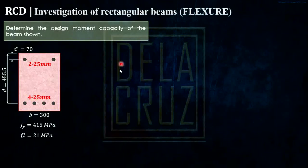Determine the design moment capacity of the beam shown. The beam is reinforced with 4-25mm tension bars and 2-25mm compression bars at a D prime distance of 70mm. We have the effective depth and these are the material strengths: fy = 415 MPa, fc' = 21 MPa. We have the base also, 300.